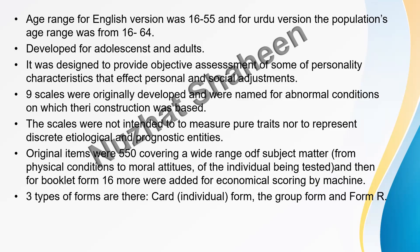For example, one sub-scale is paranoia — paranoia is itself an abnormal condition, and because the scale is built on that basis, it is called the paranoia scale and given the code PA for easy interpretation. Importantly, the scale was not intended to measure traits or prognostic entities.